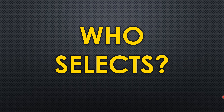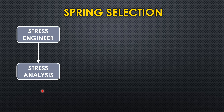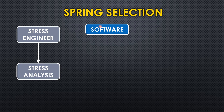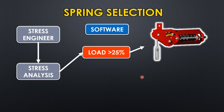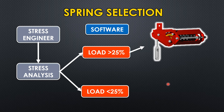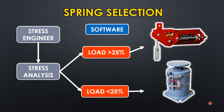Let's see who selects the spring supports. The role starts from the stress engineer, who performs stress analysis through software. The software determines which type of spring to use. The logic is: if the load variation is above 25%, the software selects a constant spring; if the load variation is below 25%, the software selects the variable spring.